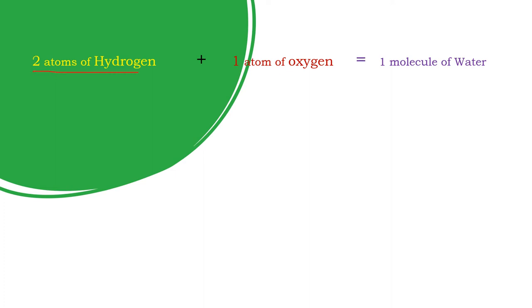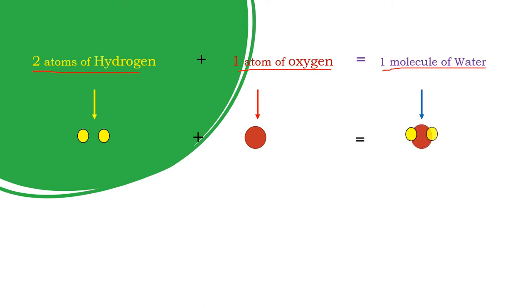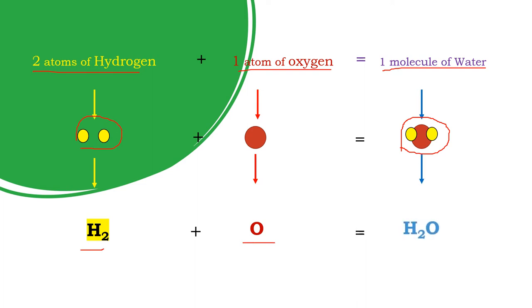Two atoms of hydrogen plus one atom of oxygen equals one molecule of water. I can represent two atoms of hydrogen like this, and one atom of oxygen like this. After chemical bonding, the two atoms of hydrogen combine with one atom of oxygen, and that gives us one molecule of water. So H2 plus one oxygen equals H2O, which is known as water.